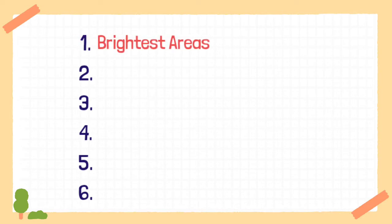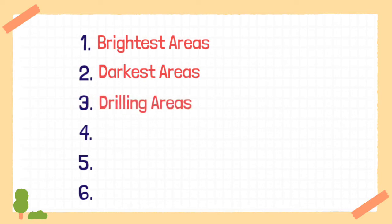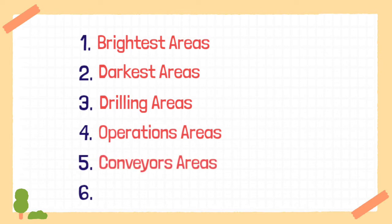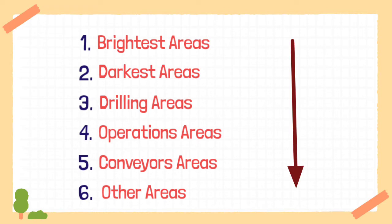The 6 major areas are: the brightest areas, the darkest areas, drilling areas, operation areas, areas related to conveyors, and other areas in the mines. By remembering these 6 main areas, we could easily remember the values given in the circular.